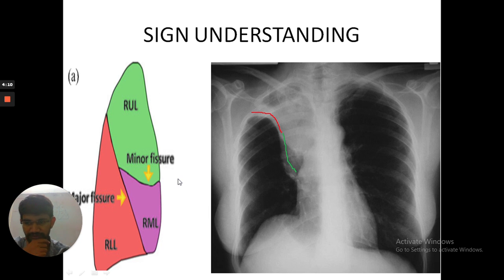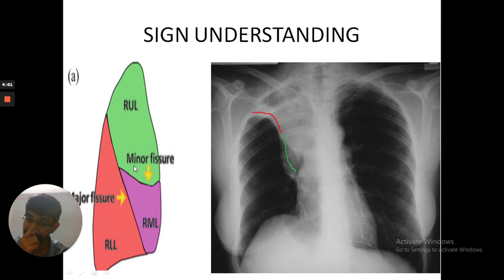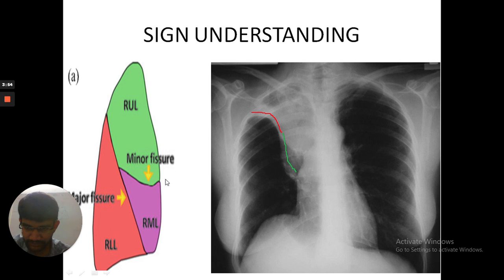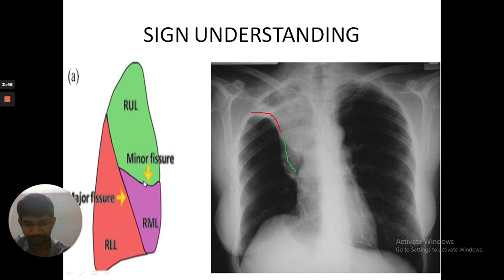On the left of the screen, you can see the right upper lobe. There is a minor fissure which separates the right upper lobe and the middle lobe, and the major fissure which separates the middle and the lower lobe. As you can see, the minor fissure — please follow my cursor — is more or less parallel, a straight line in normal anatomy.